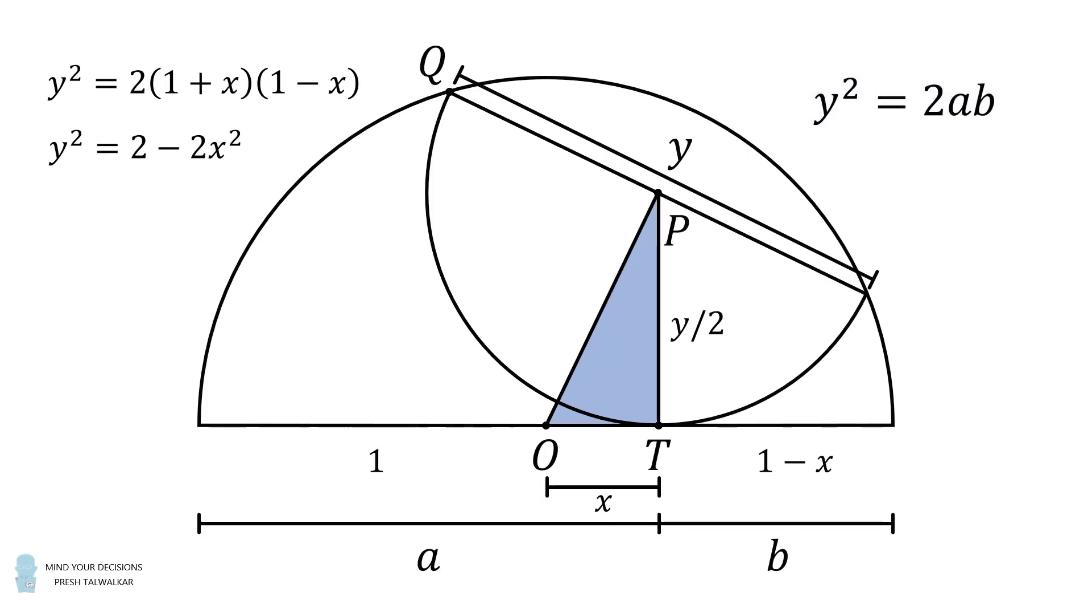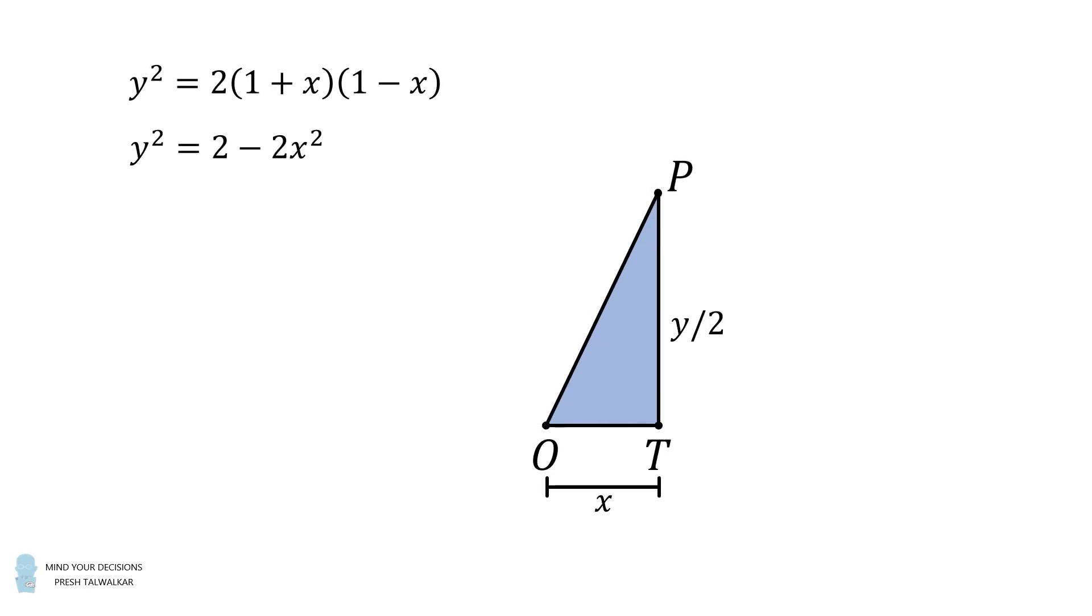Now we're interested in the locus of point P. The point P has coordinates of x comma y over 2. So let's go back and simplify our equation further. We can rewrite it as 2x squared plus y squared is equal to 2.